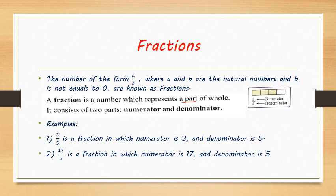Such numbers in the form of a by b are known as fractions. For example, three upon five is a fraction where three is the numerator and five is the denominator. Similarly, 17 upon five is also a fraction in the form of a by b, where 17 is the numerator and five is the denominator.